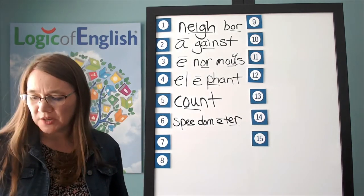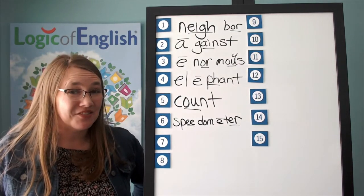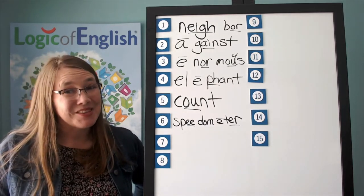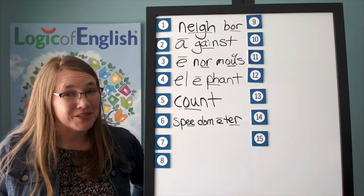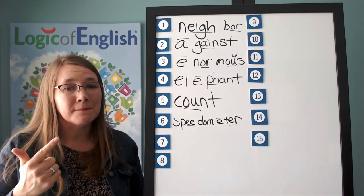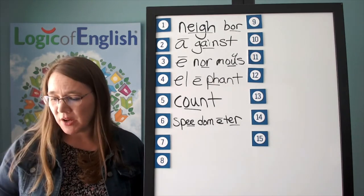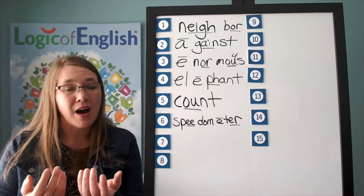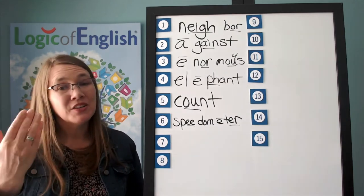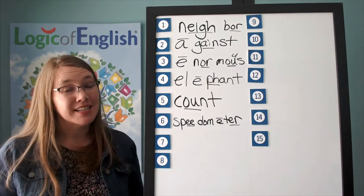The next word is thermometer. Can you find the thermometer to see if she has a fever? Thermometer. Say thermometer with me. How many syllables in thermometer? Four. We will say to spell thur-mom-e-tur. What will we say to spell? Thur-mom-e-tur.